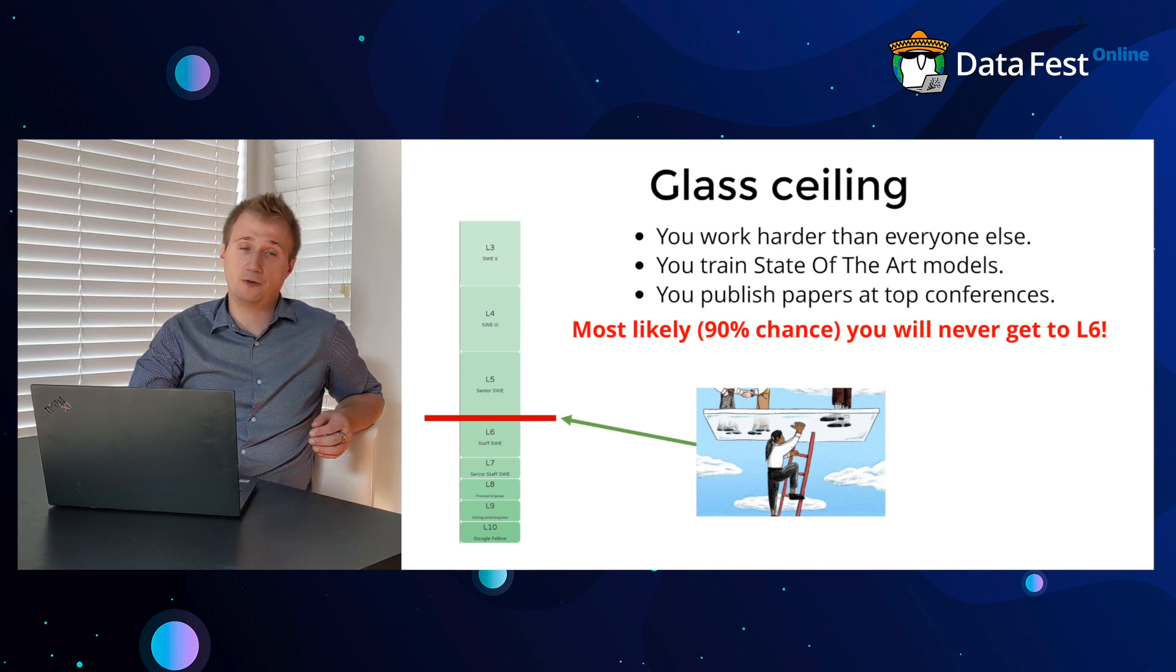To give you perspective, if you don't have a PhD and you're joining a company fresh out of school, you're going for L3. If you have a PhD, you're joining as L4.